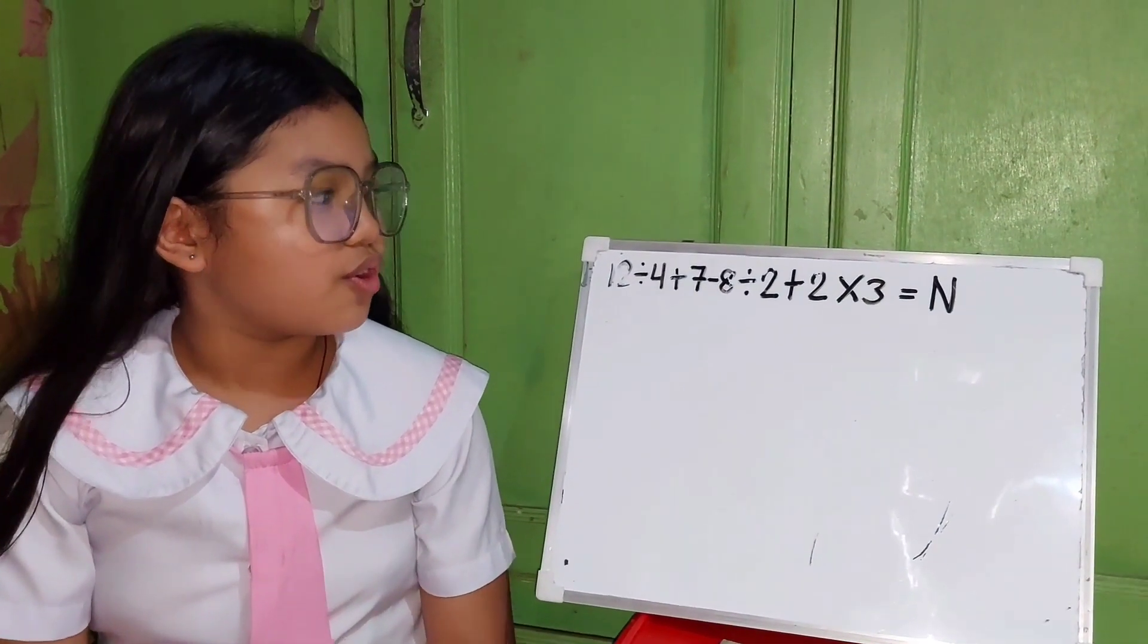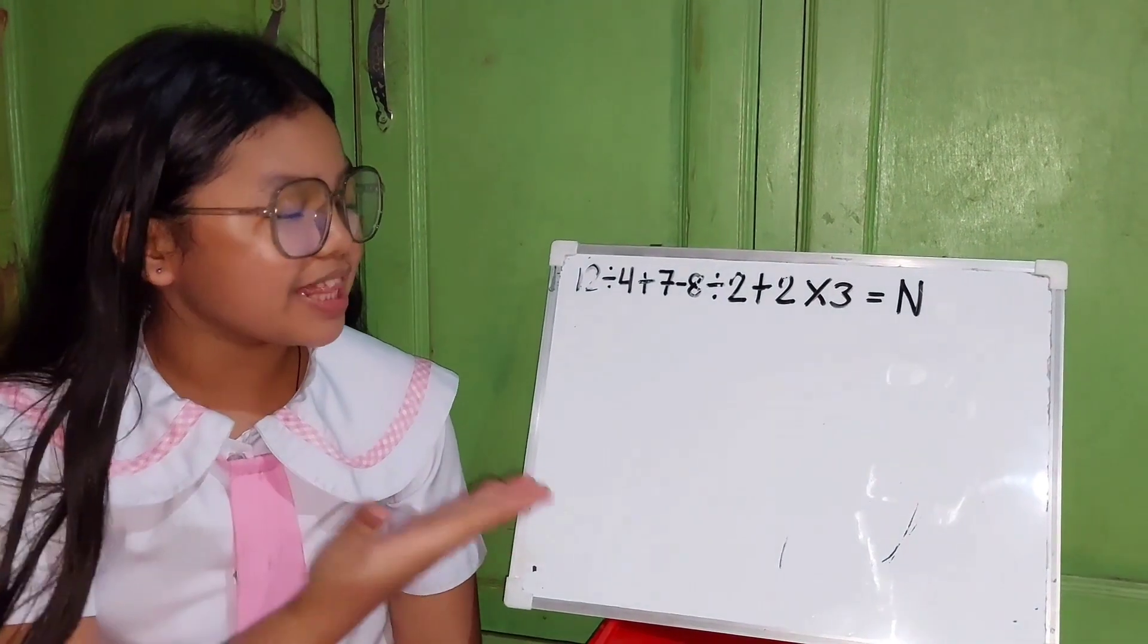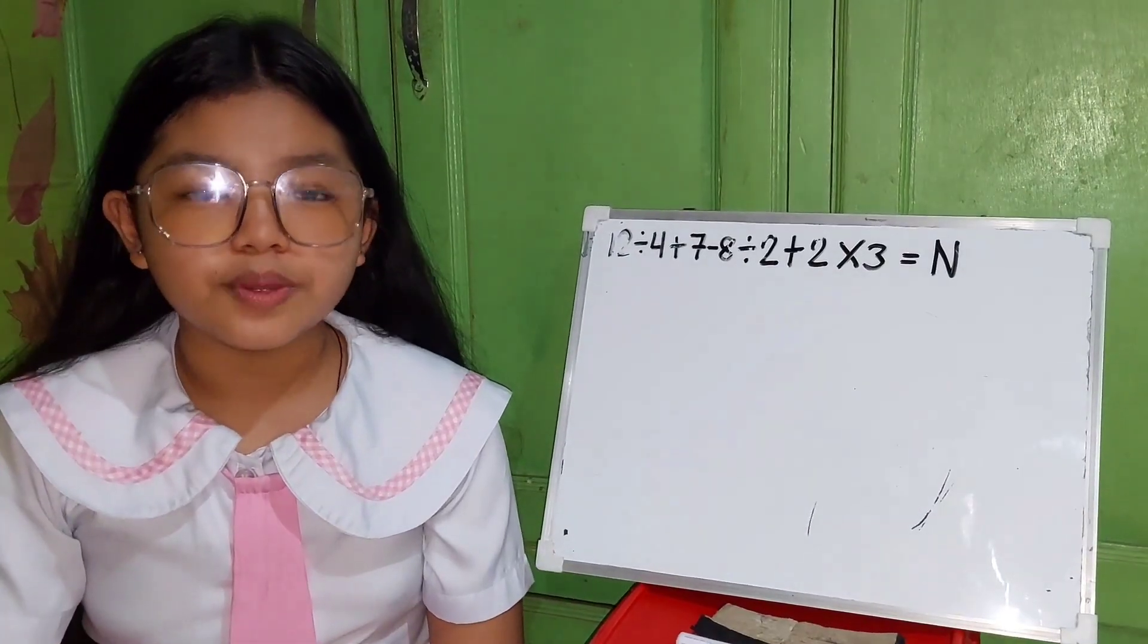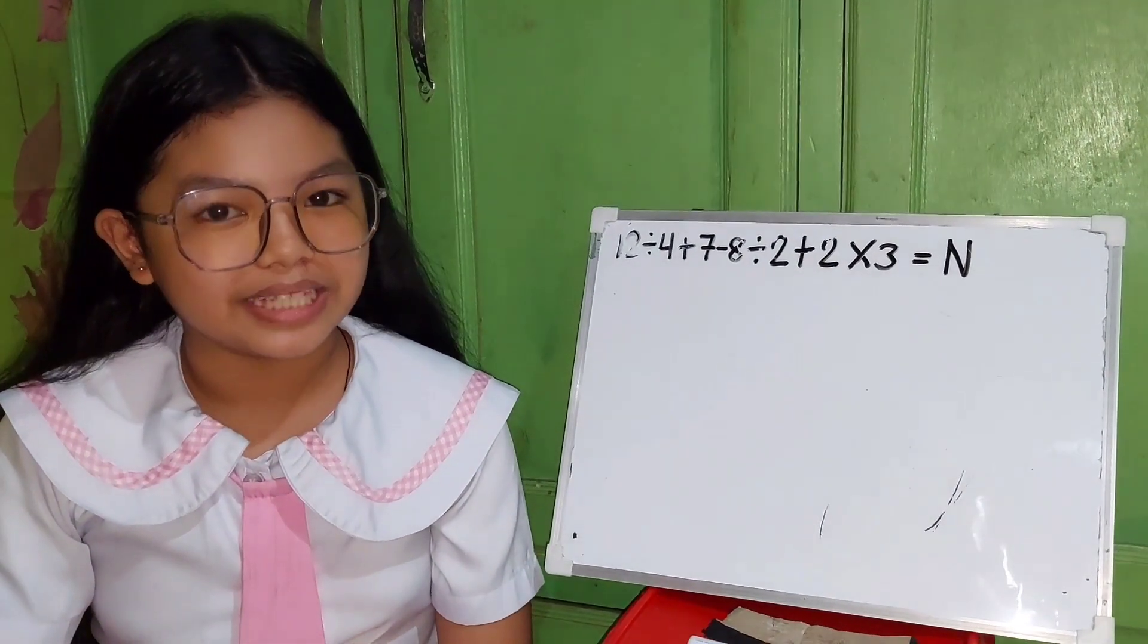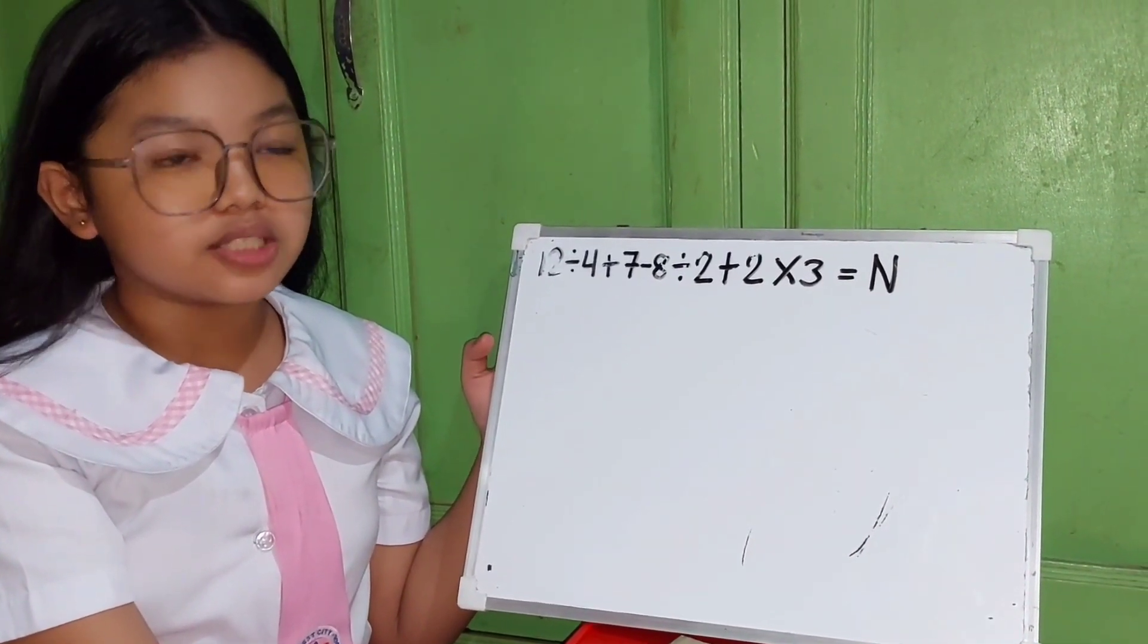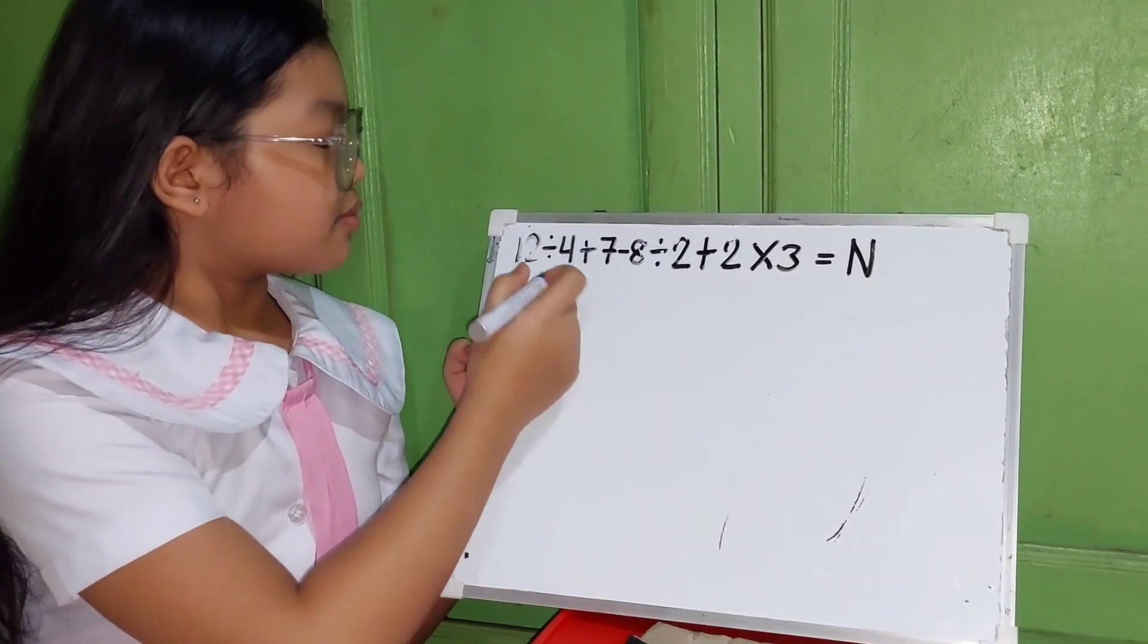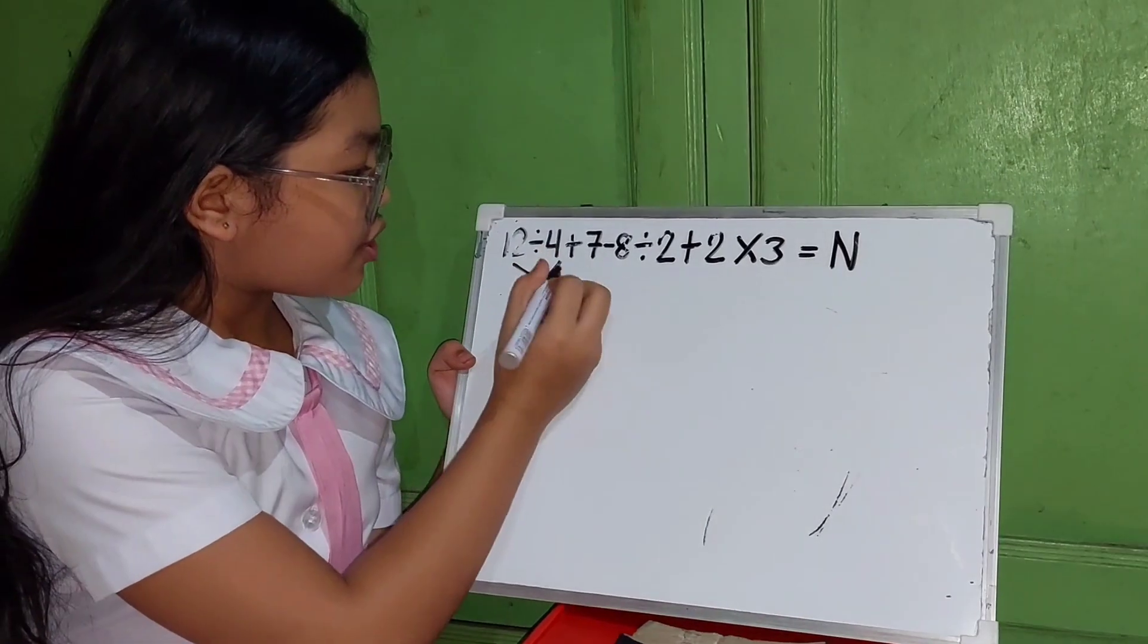Since there is no grouping symbol or parentheses in our mathematical expression, we will use MDAS, wherein first we are going to multiply or divide whichever comes first from left to right. So in this expression, we will divide first 12 and 4. 12 divided by 4 equals 3.